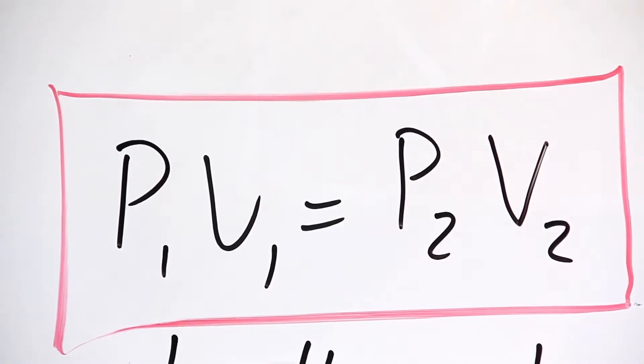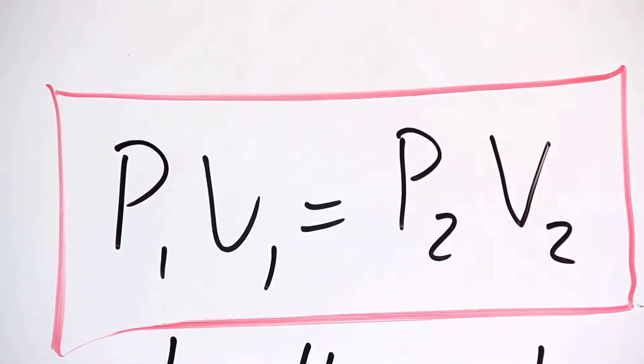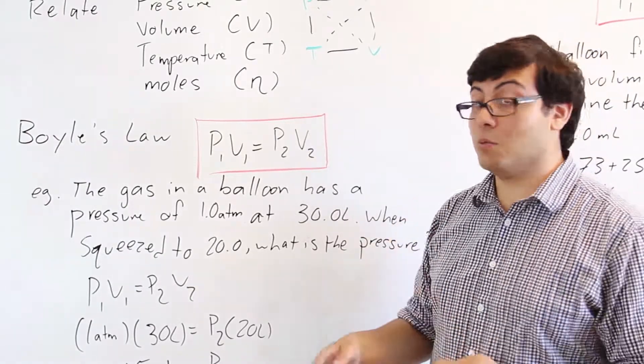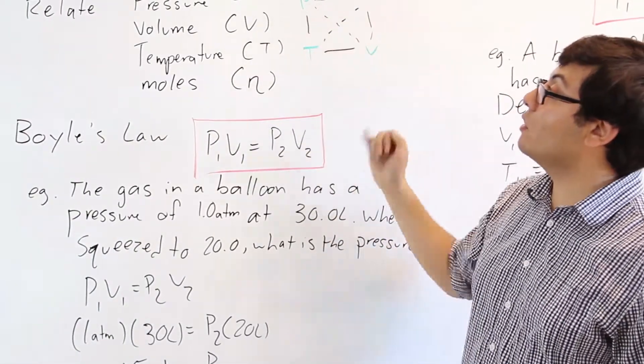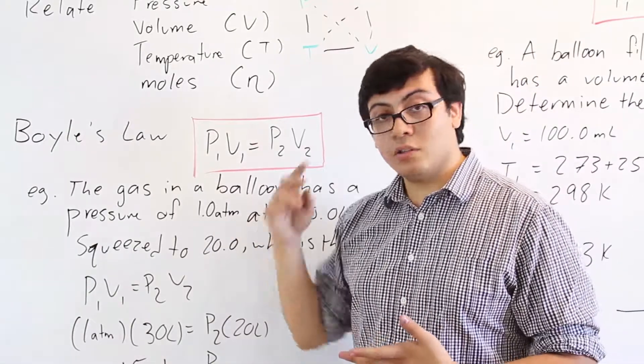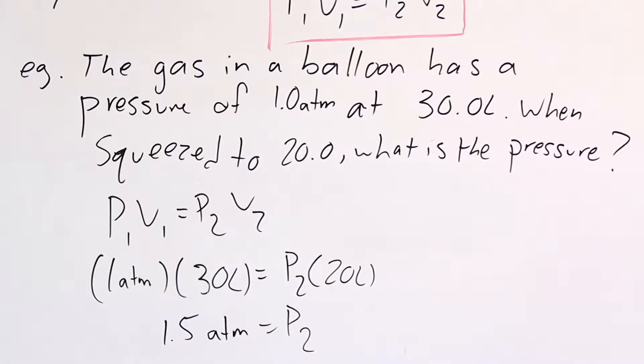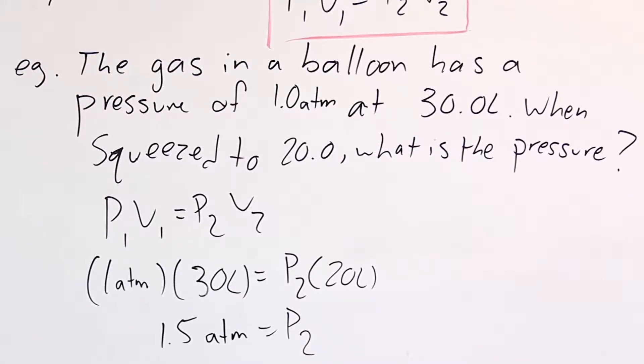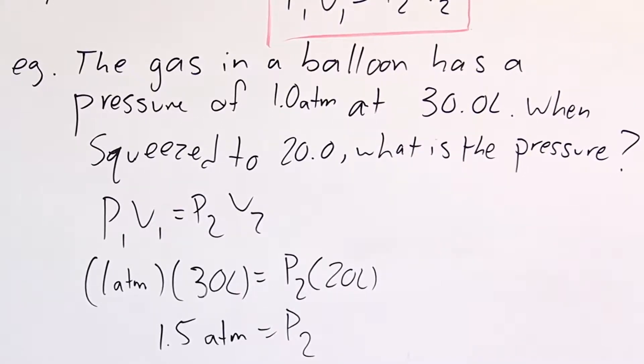So the first law you need to know about is Boyle's law. Boyle's law is about pressure and volume, and it says that pressure is inversely proportional to volume, which we have over here in our little square. So let's do a practice question. The gas in a balloon has a pressure of one atmosphere at 30 liters. When squeezed to 20 liters, what is the pressure?